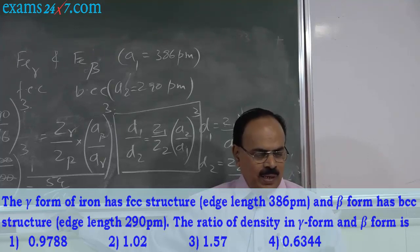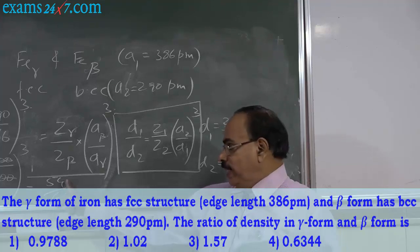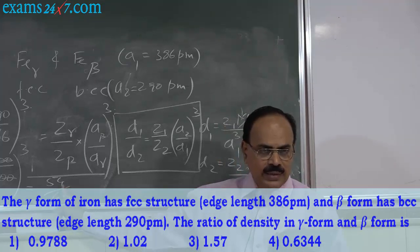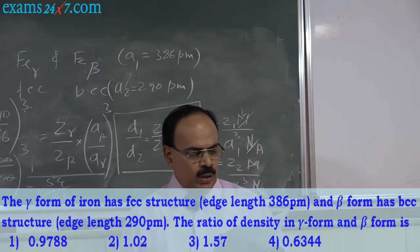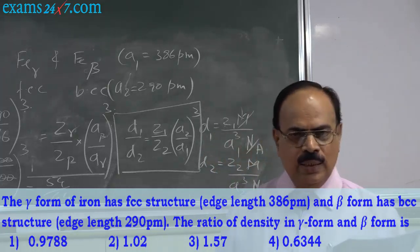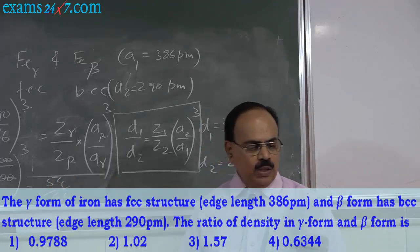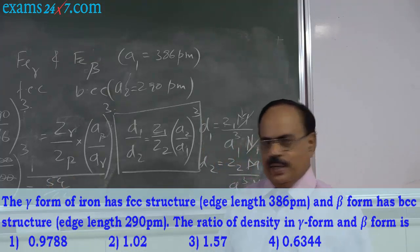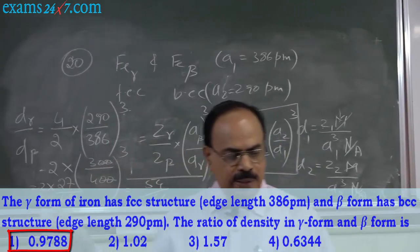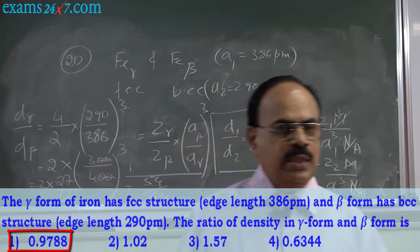For that, no calculator is required. Other answers are 1.02 and similar — whatever the correct answer, it cannot be more than 1. So any answer more than 1 is definitely wrong. The fourth option is 0.6 — the ratio cannot be as low as 0.6. Therefore, the first option, 0.9788, is the correct answer.